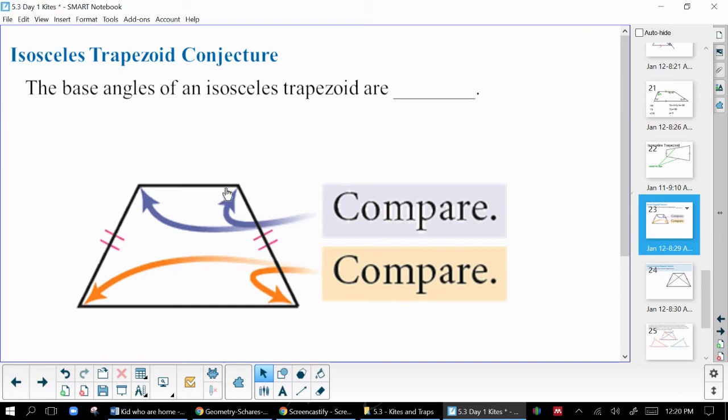So now let's talk about those base angle pairs. Just like in an isosceles triangle, you can imagine if I extended these up and made this into a triangle, those two would be the base angles of my isosceles triangle. Just like an isosceles triangle, they are equal. The base angles of an isosceles trapezoid are congruent, or you could put equal, of course. But this is important there only if it's an isosceles trapezoid.